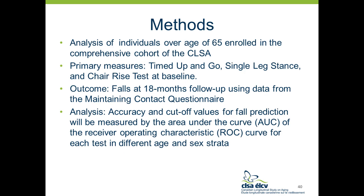The area under the curve of the receiver operating characteristic curve — the AUC — was used to analyze predictive accuracy. An AUC of 0.5 indicates the test cannot discriminate between fallers and non-fallers, no better than chance, whereas an AUC between 0.7 and 0.8 would be considered good.